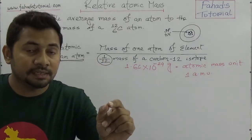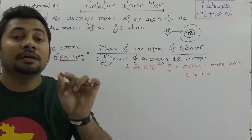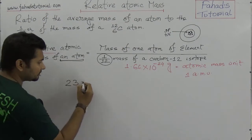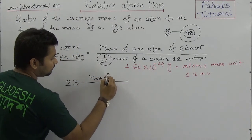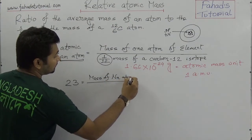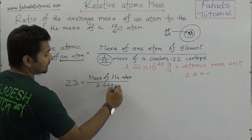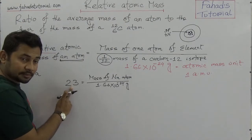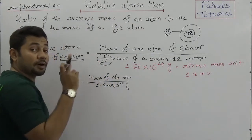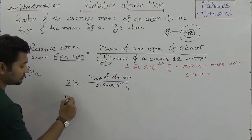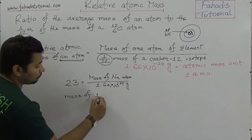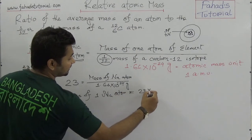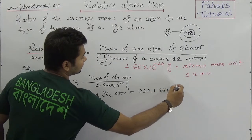It means that an atom of sodium element is 23 times higher than the one-twelfth mass of the carbon-12 isotope. The understanding is: sodium atom's relative atomic mass is 23. How we calculate it — because it's written in the periodic table. In the case of sodium, this is 23 — sodium-23. So this is the mass of the sodium atom divided by 1.66 × 10⁻²⁴.